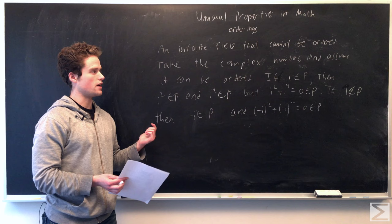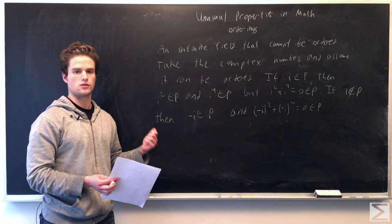So we say i is positive, so it's in the set. Then that implies i squared and i to the fourth is also in the set, since it's closed under multiplication. i squared is negative one, i to the fourth is one.